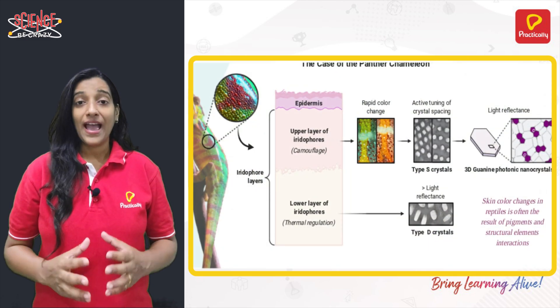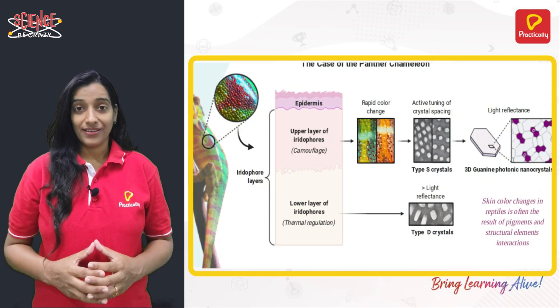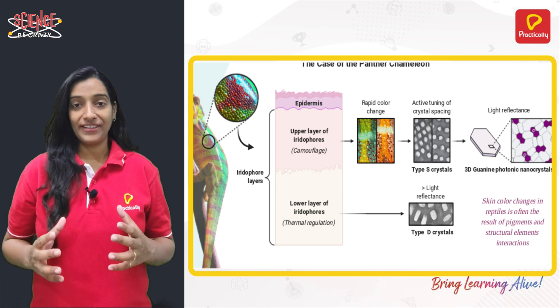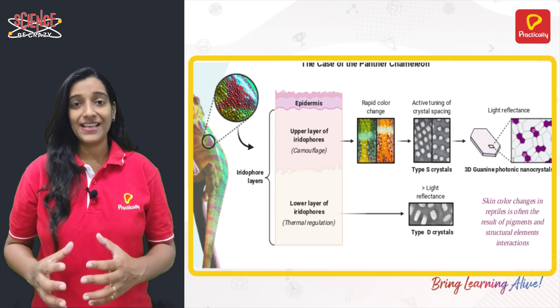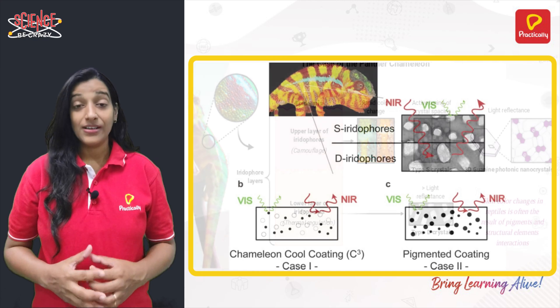Chameleon skin has three different layers in them. These three different layers of cells can give different coloration to a chameleon.